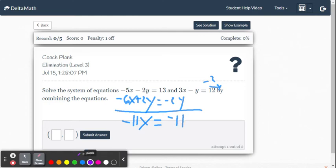So now we're going to divide both sides by negative 11, so we get 1x positive. We divide both sides by negative 11, and we get x equals 1. x coordinate is 1.